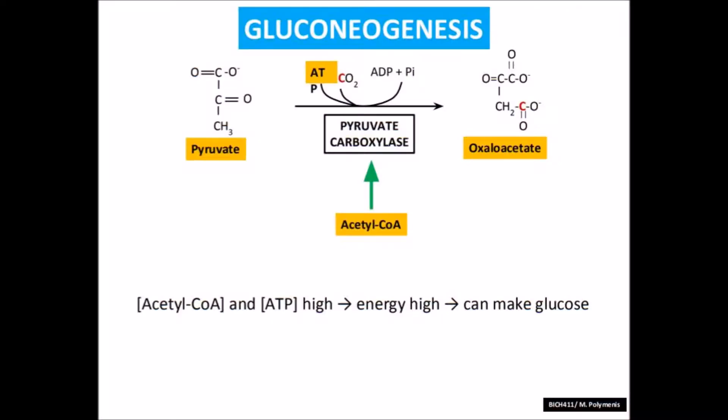Pyruvate carboxylase is one of the tweaks I mentioned earlier in glycolysis being backwards. Using a biotin and carbon dioxide complex, pyruvate carboxylase is used in the mitochondrial matrix to carboxylate pyruvate and to make oxaloacetate, which is also an intermediate of the Krebs cycle. The reaction requires one ATP, creating an ADP as an additional product. Substrates such as acetyl-CoA and ATP are activators of the reaction, while a large concentration of oxaloacetate will slow the process.